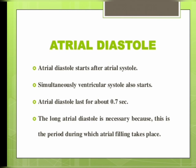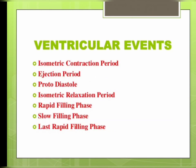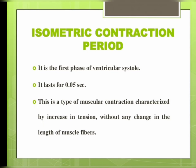Now the next is ventricular events. In the ventricular event the sequence is: isometric contraction period, ejection period, protodiastole, isometric relaxation period, rapid filling phase, slow filling phase, then last rapid filling phase. The isometric contraction period is the first phase of ventricular systole and it lasts for 0.05 second.